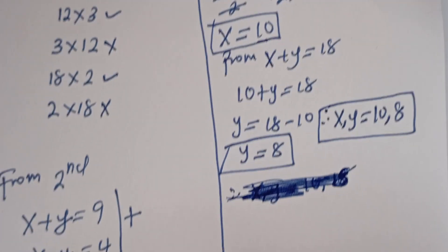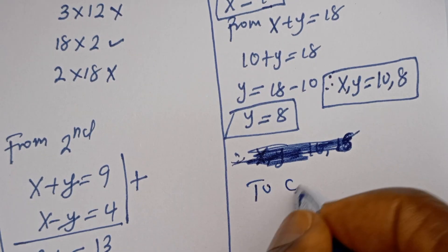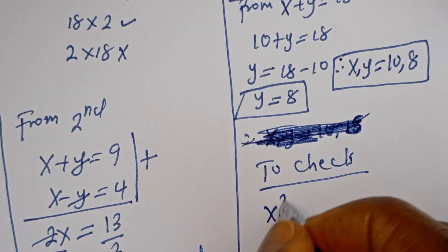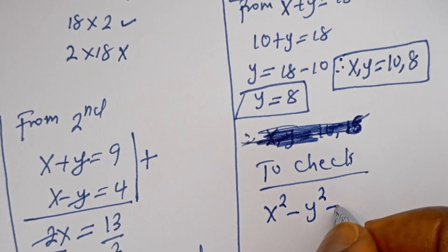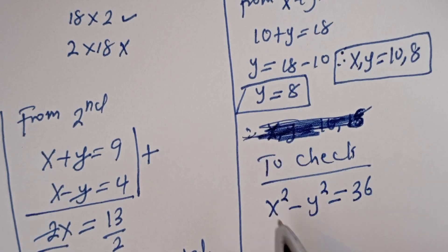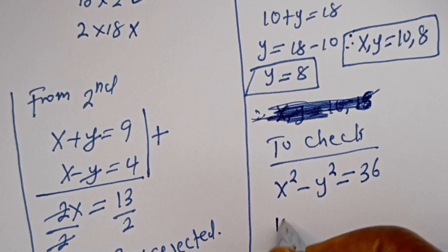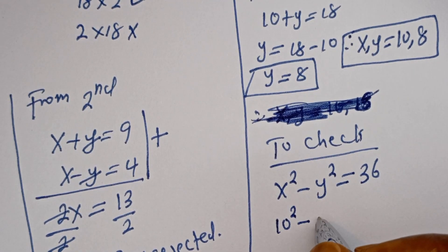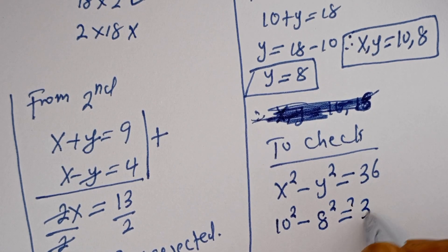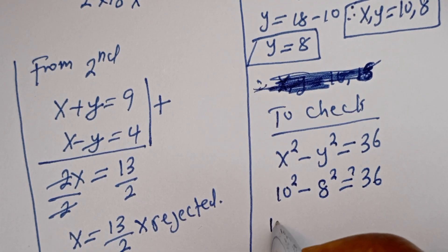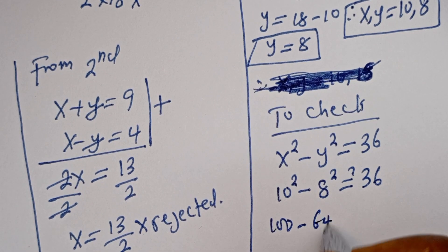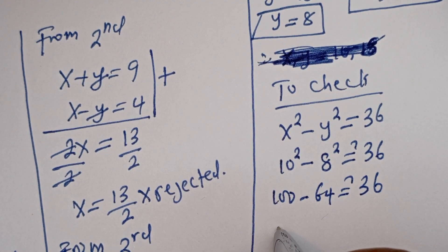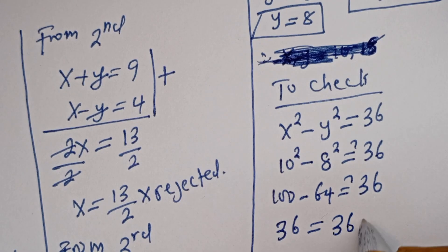Let's check. Using the given equation, x squared minus y squared is equal to 36. When x is 10 and y is 8: 10 squared minus 8 squared equals 100 minus 64, which is 36. This equals 36, which is true.